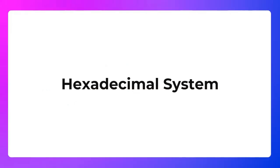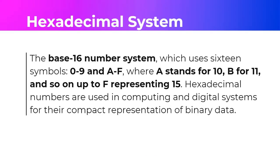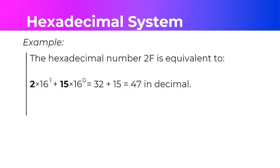Last but not the least is the hexadecimal system — the base 16 number system, which uses 16 symbols starting from 0 to 9, then A to F, where A stands for 10, B for 11, up until F which is 15. Hexadecimal numbers are used in computing and digital systems for their compact representation of binary data. The hexadecimal number 2F: multiply by 16 according to position. 16 raised to 0 is 1, times F which is 15 equals 15. Then 16 raised to 1 is 16 times 2 equals 32. Adding: 32 plus 15 is 47. So 2F base 16 is equivalent to 47 decimal.